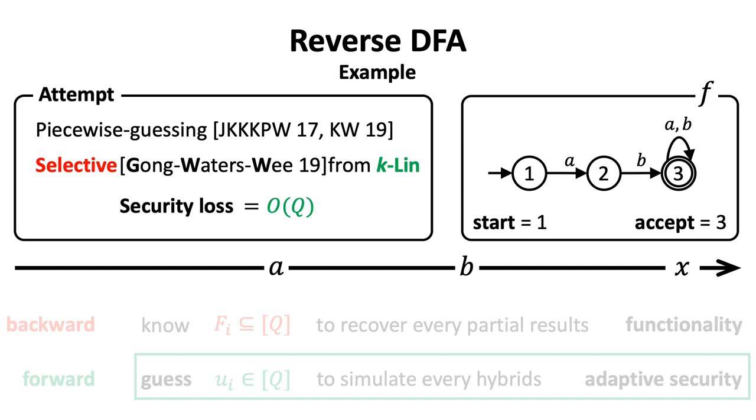To implement this strategy, we generate secret key for reversed f instead of the original f, and generate ciphertext for reversed x instead of the original x. We explain reverse DFA with reversed input using this example.